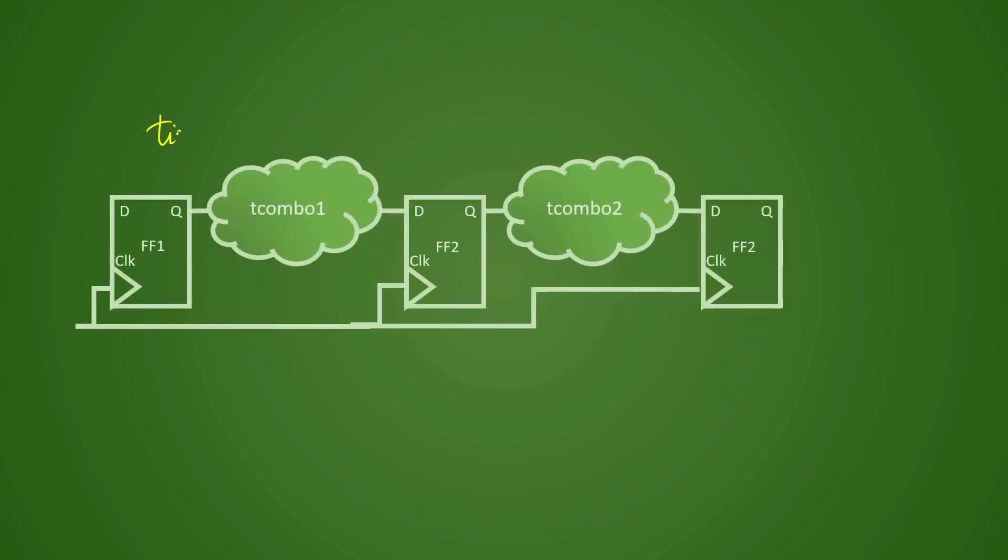If this is our timing path, this kind of example we have seen already earlier. In this timing path, if you see, we take the clock source here and what we say is it will take some time from here to here to reach. So we take, let's say, the clock latency, that is the clock taking the time to reach the clock pin of FF1. Let's say it is T1.